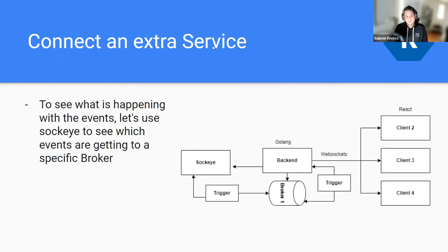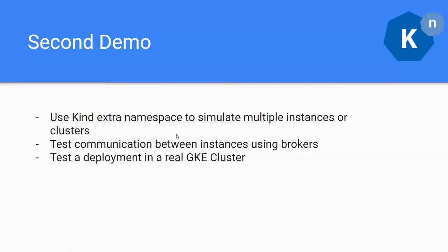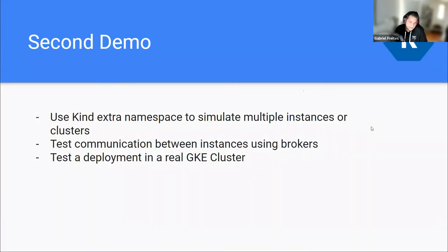For this example, I'm also going to use one of the benefits of event-driven architecture — you can extend your application pretty easily. We're going to create another trigger that forwards events on the broker to a service called Sockeye. This service lets you see cloud events in a user-friendly format. We're going to see what happens when we create new instances of the chat and what cloud events are arriving at those new instances.